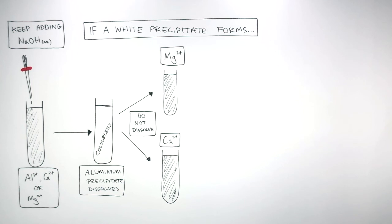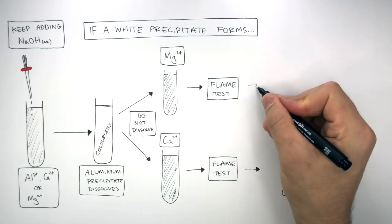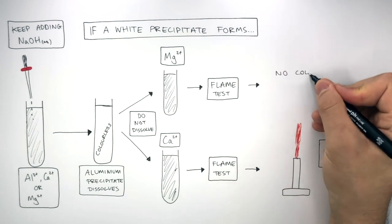Calcium ions will cause the flame on a Bunsen burner to be orange-red, and magnesium ions will show no colour change in a flame test.